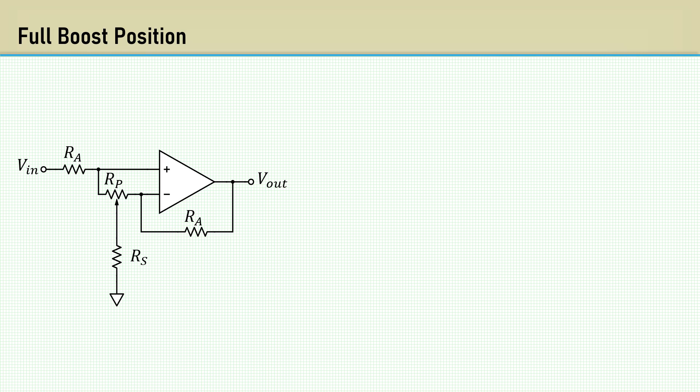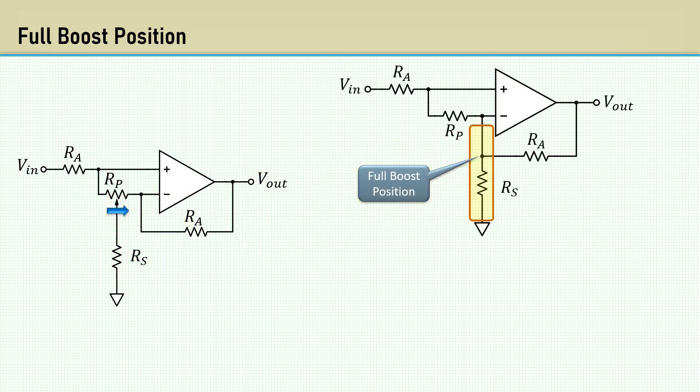Let's now analyze the circuit in full boost mode by moving RS to the right side of the pot. Once again, V plus equals V minus, and therefore the voltage across the pot is 0. Again, there is 0 current flowing into the inputs, therefore V plus equals V in. In other words, no drop across the input resistor RA. The gain is simply the op-amp gain made by the feedback resistors RA and RS, which is the standard non-inverting amplifier equation, RS plus RA over RS.